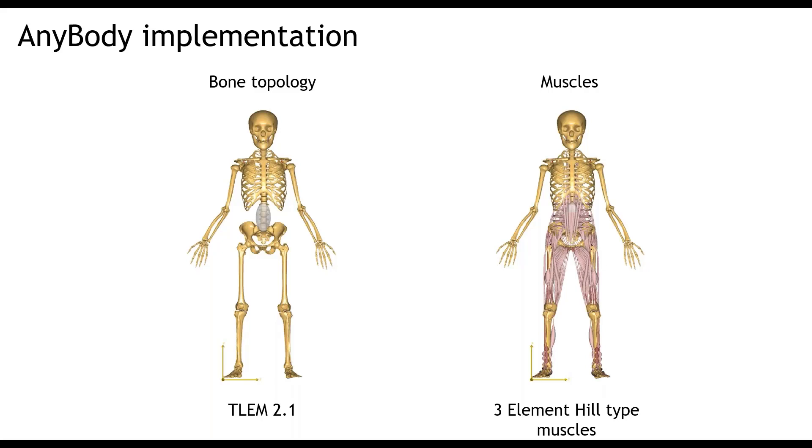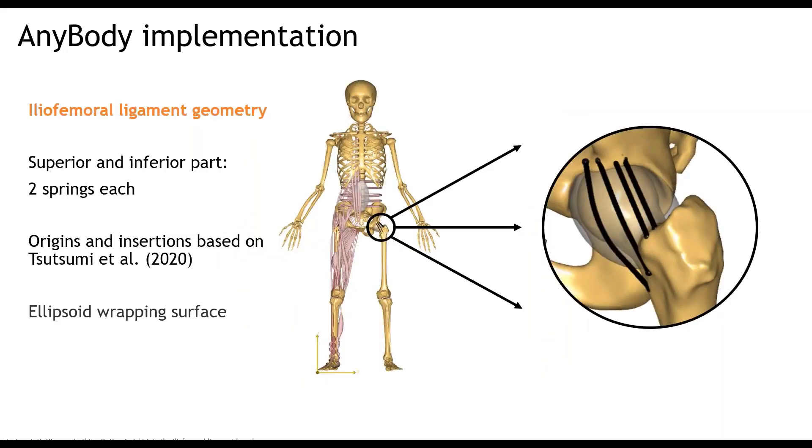We simulated their walking trials in the Anybody modeling system. To do so, we used the standard bone topology, which is the TLEM lower extremity model, version 2.1. And we also used the three-element hill-type muscles. We scaled the models with the standard length mass fat scaling law. Of course, important for our study was the implementation of the iliofemoral ligament. We modeled the superior and inferior parts separately. For each part, we used two springs. So, we used a total of four springs to model the iliofemoral ligament. This is illustrated at the right side of the slide with the four black lines. We defined the origins and insertions based on the work of Tsutsumi and his colleagues in 2020. To make sure that the ligaments do not intersect with the acetabular rim or the femoral neck, we used an ellipsoid wrapping surface.